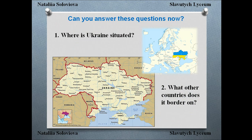We have finished with that exercise. Do you remember those questions I asked you at the beginning of the lesson? I think you are ready to answer them now. So let's answer these questions about Ukraine. Where is Ukraine situated? It's situated in the center of Europe — or you may say it is a European country. Any answer will be correct. What other countries does it border on?